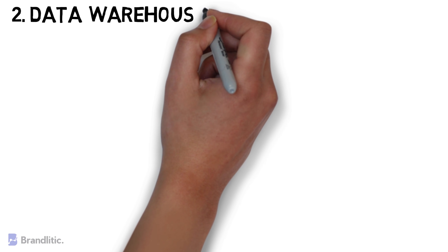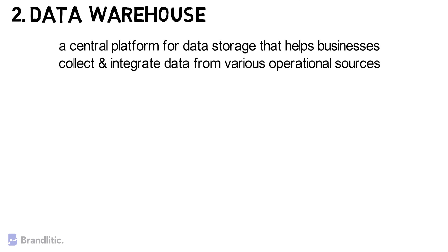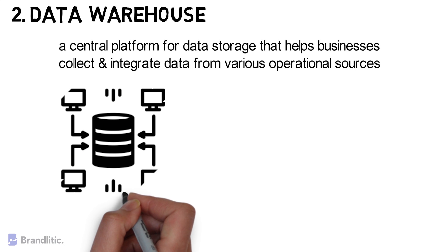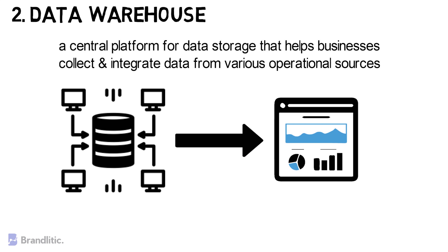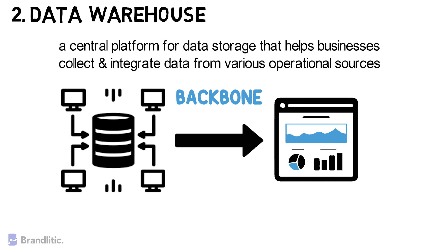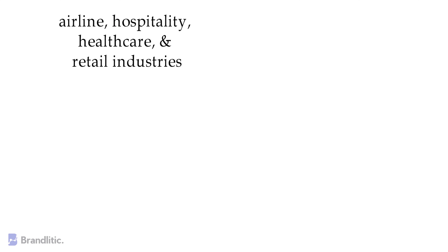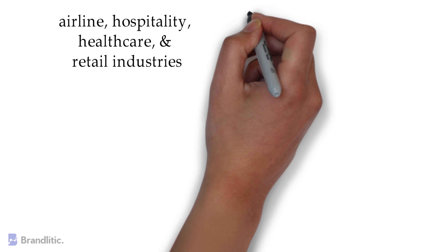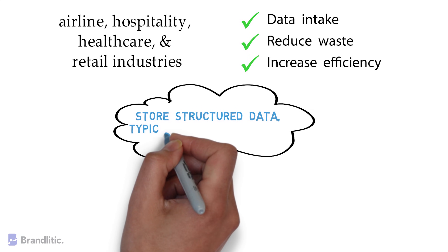Now that we have a good idea about how data has been stored in the internet age, let's look at some newer storage mechanisms, starting with the data warehouse. A data warehouse is a central platform for data storage that helps businesses collect and integrate data from various operational sources. This data is put into reports used for data analytics and business intelligence efforts. Data warehouses serve as the backbone for mission-critical operations across airline, hospitality, healthcare, and retail industries, helping streamline data intake, reduce waste, and increase efficiency. In most cases, data warehouses store structured data, typically from databases.